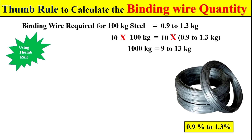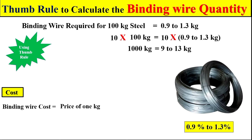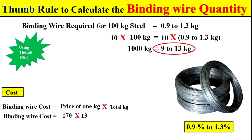If you are interested to find the total cost of binding wire, remember the cost of binding wire will be equal to the price of 1 kg of binding wire multiplied by the total number of kg. The cost of binding wire depends on the quality, but for normal construction the price of 1 kg of binding wire is 170 rupees. We multiply this with the total number of kg to get the total cost of binding wire.